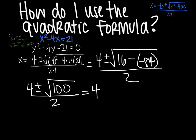And then 4 plus or minus 10 all divided by 2. Now these square roots are actually working out nicely to be perfect squares, but that's not always the case.